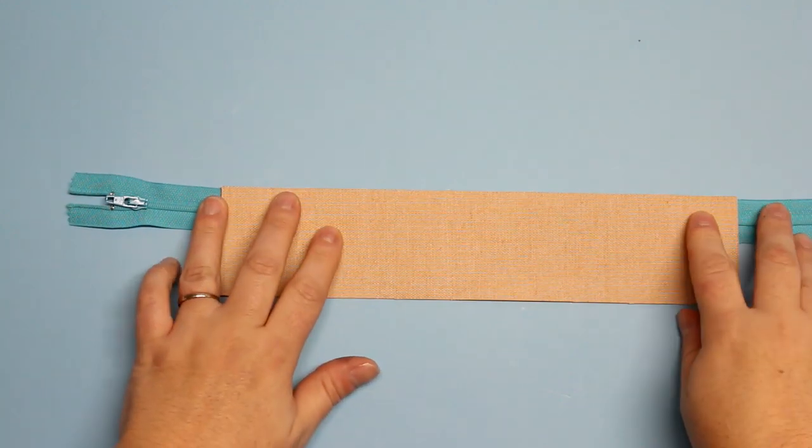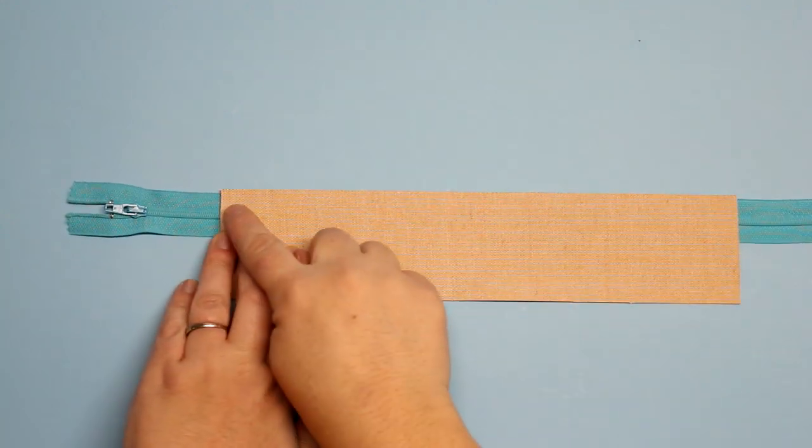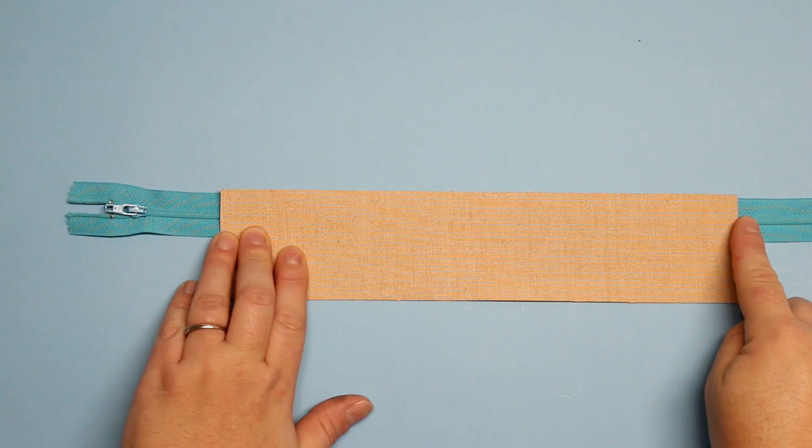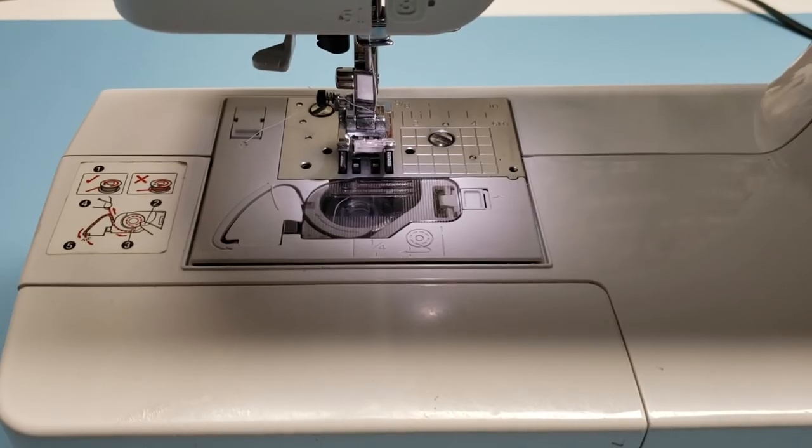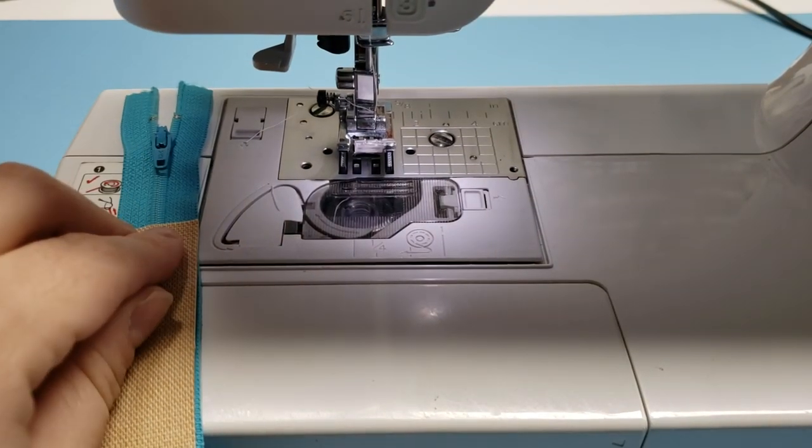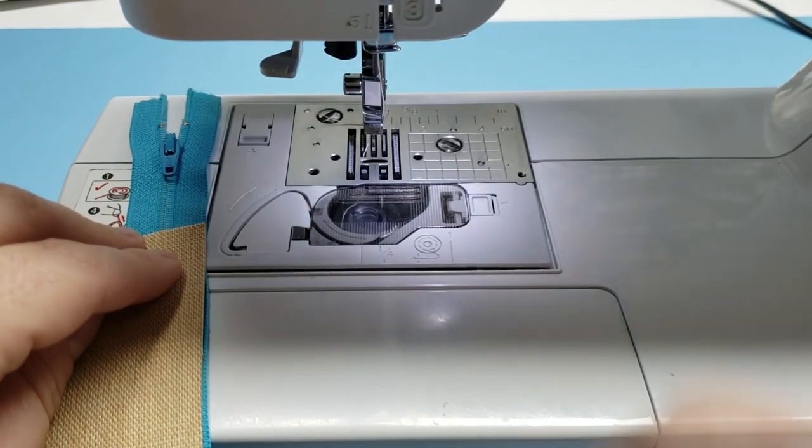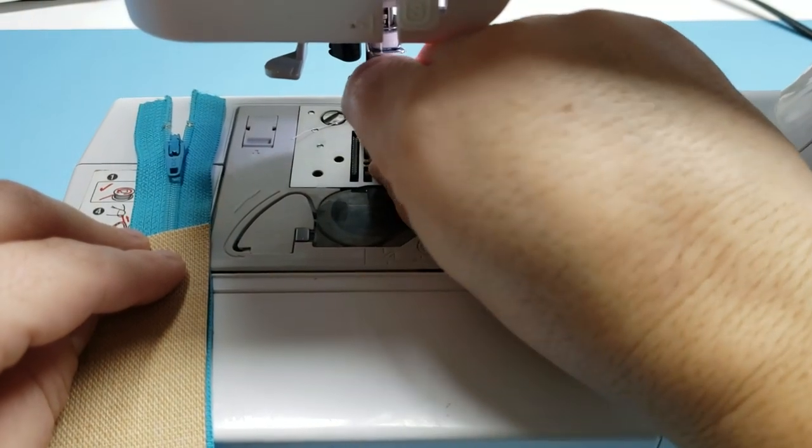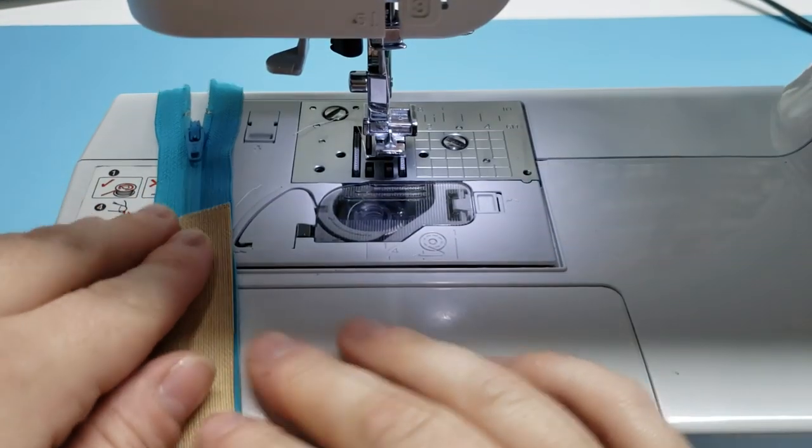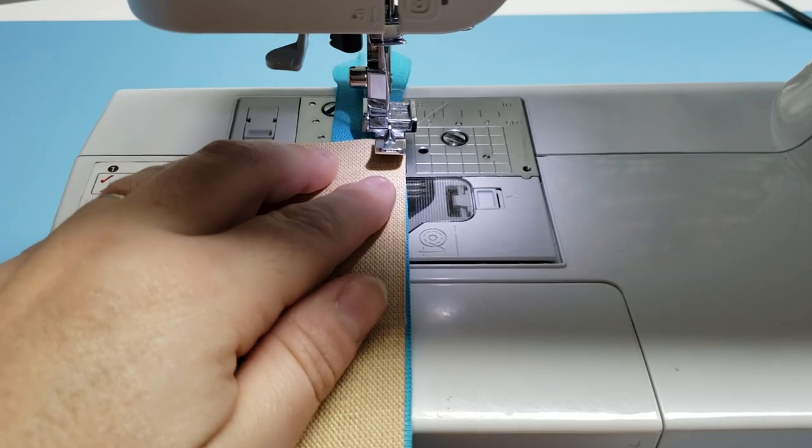So the first thing we're going to do is install our zipper and create that zipper panel. I'm going to take one piece of the zipper panel and place that on top of the zipper. Make sure that the zipper pull is going towards the nice side of your fabric and I'm going to line up the sides there and sew right down.